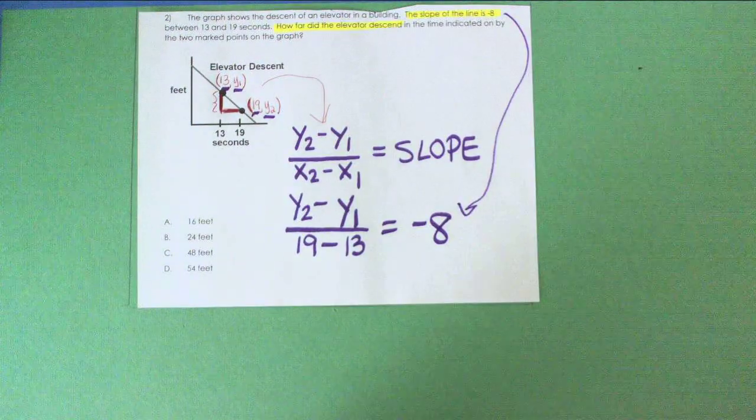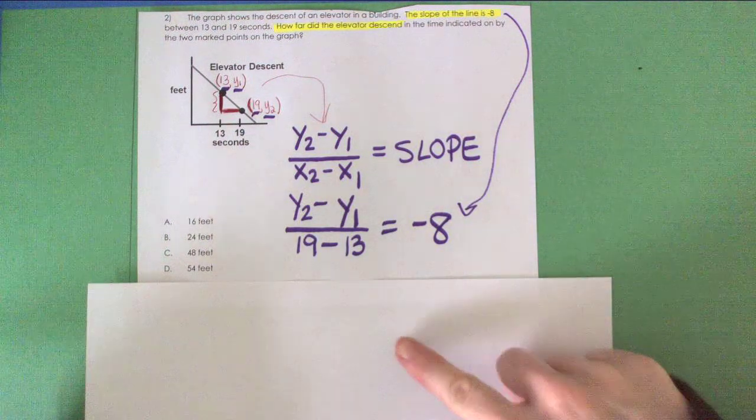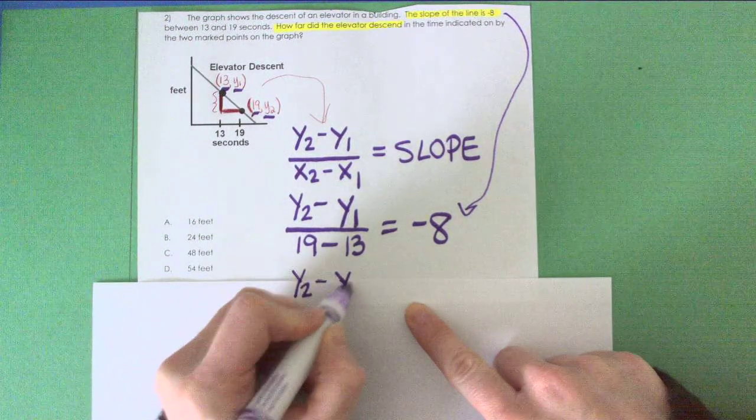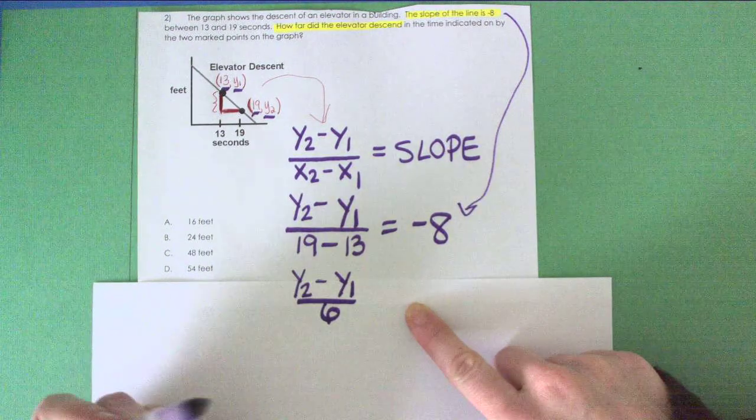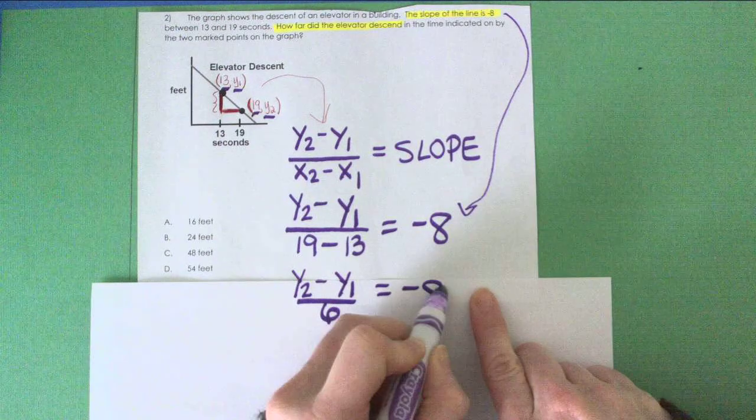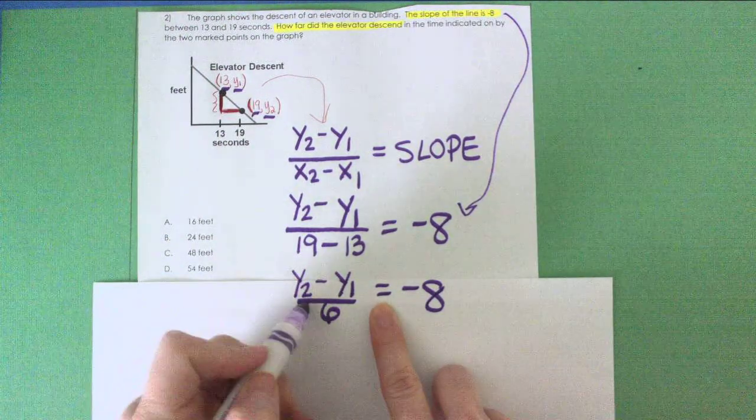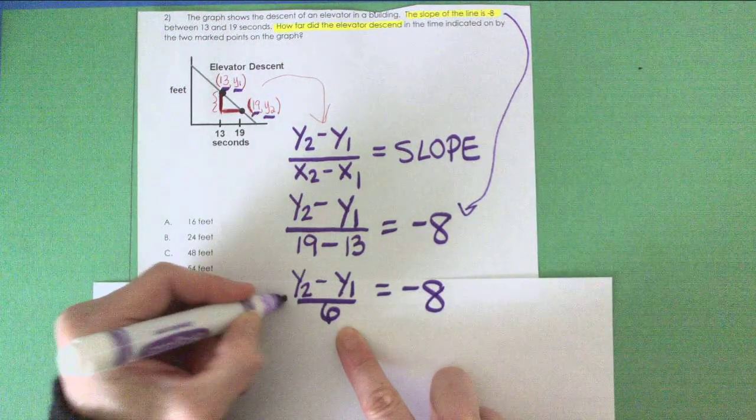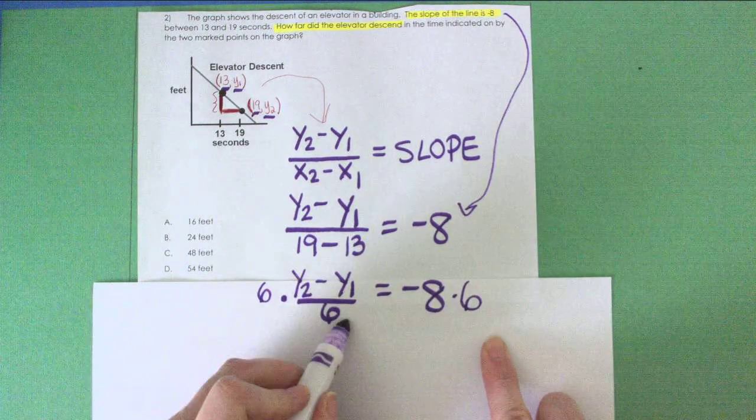If I do a little more math here, I'm going to get Y sub 2 minus Y sub 1 over 6, because 19 minus 13 is 6, equals negative 8. Now when solving an equation where I have this denominator of 6, to get rid of it I can multiply both sides by 6, which is going to cancel these out.